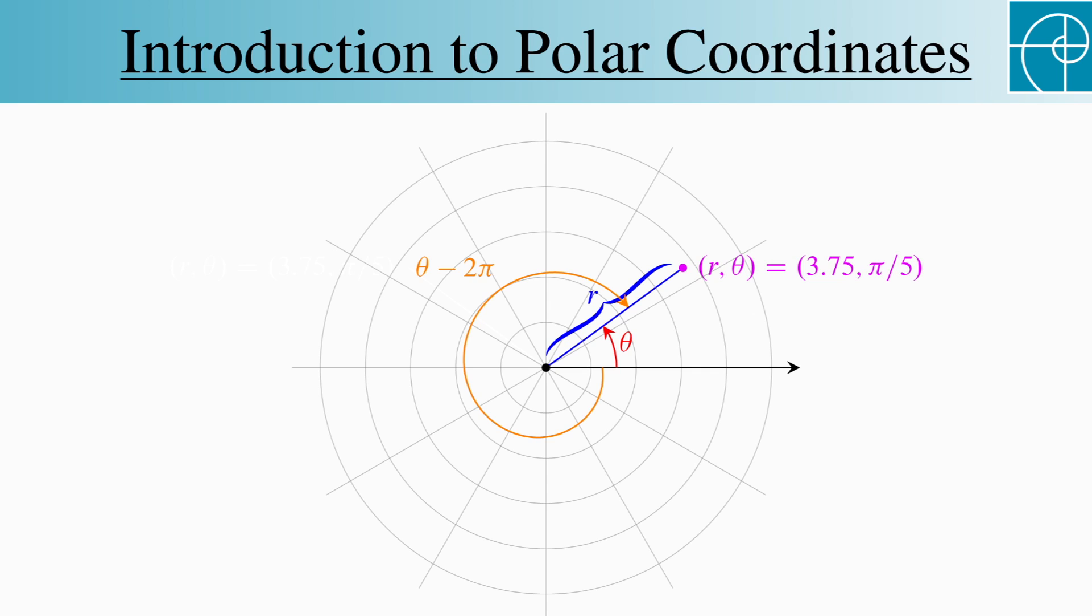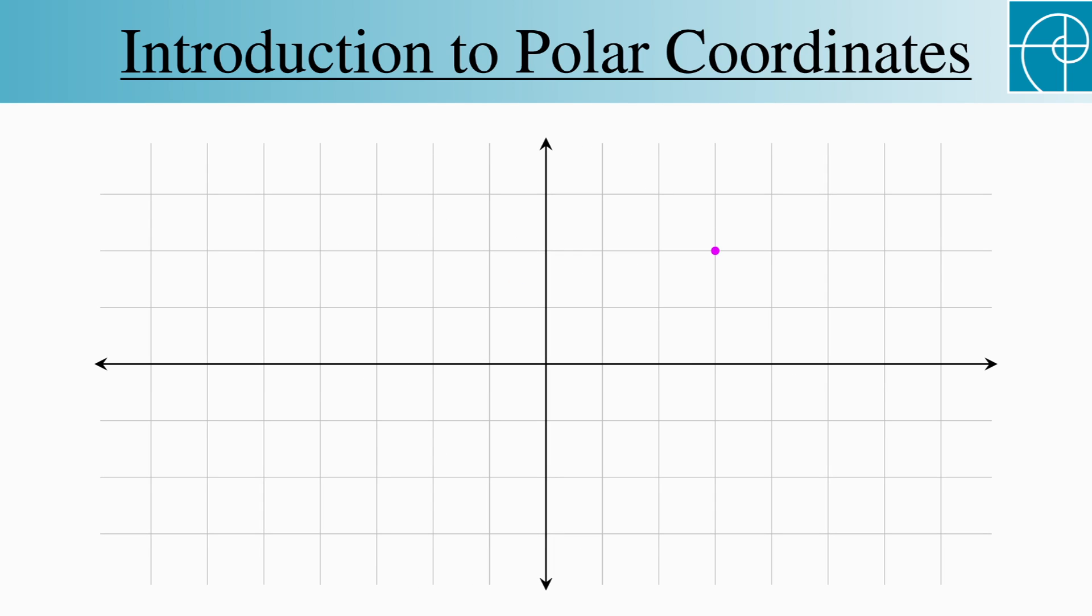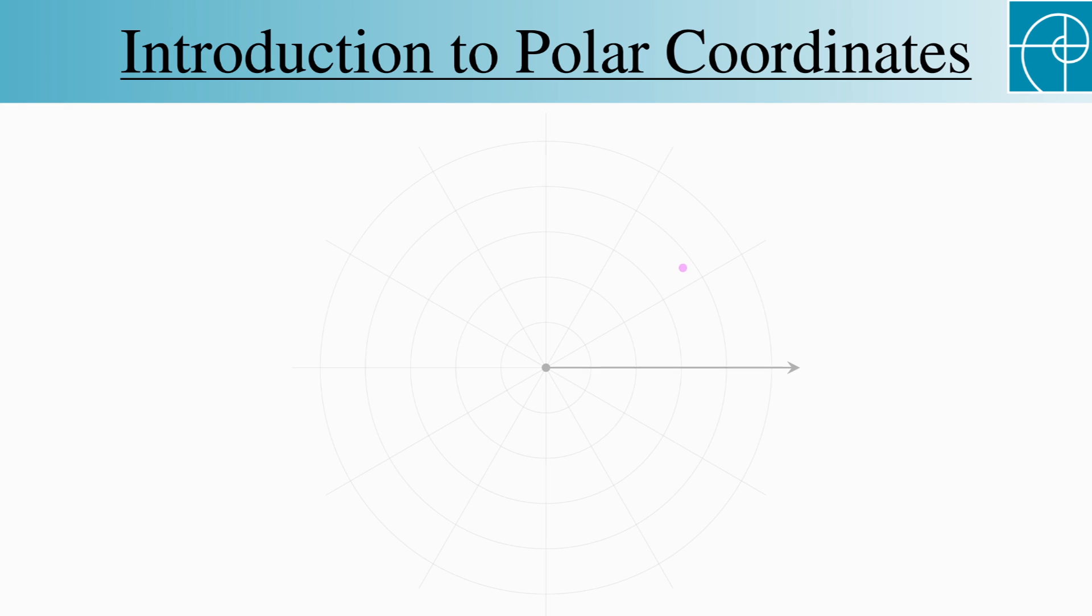The underlying idea behind the two systems is the same, though. We specify points as intersections of two specified paths. In rectangular coordinates, these paths are lines, one specified by an x value and the other by a y value. In polar coordinates, one of these paths is a circle and the other is a ray.